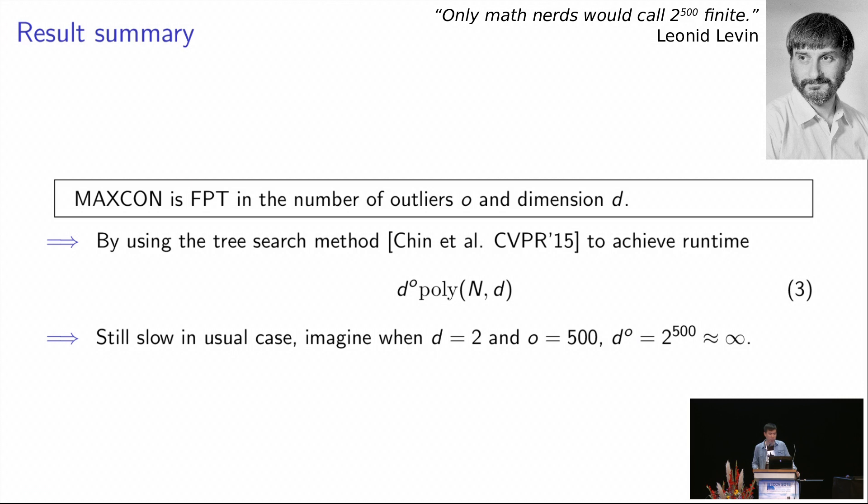This can be achieved by using the tree search method proposed by my supervisor TJ to achieve the runtime of D to the O times the polynomial function of N and D. Although you might think of this as a slightly positive result, but look at it deeply, you'll find out that even for a very low dimension problem and a moderate number of outliers, the runtime will still approach to nearly infinite.